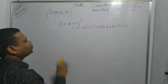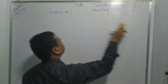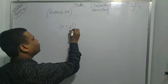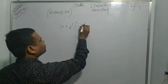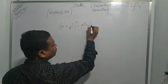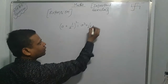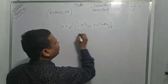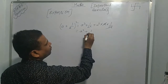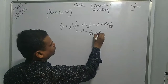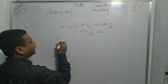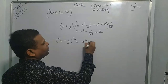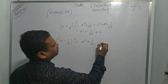Students, if you want to apply the formula for a plus 1 upon a whole square: it will be a squared plus 1 upon a squared plus 2. The 2ab term — since a times 1/a equals 1 — gives just 2. Similarly, if we have a minus 1 upon a whole square, it will be a squared plus 1 upon a squared minus 2.